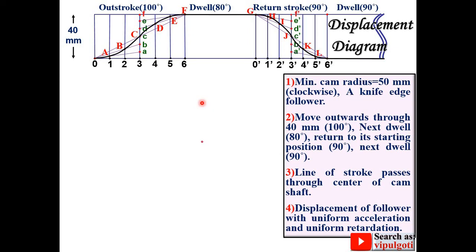Now for the cam profile. So let's take any one point randomly and give the name as O. Draw the vertical center line passing through this O point. Next draw the base circle with minimum radius as 50 mm with the help of the compass.